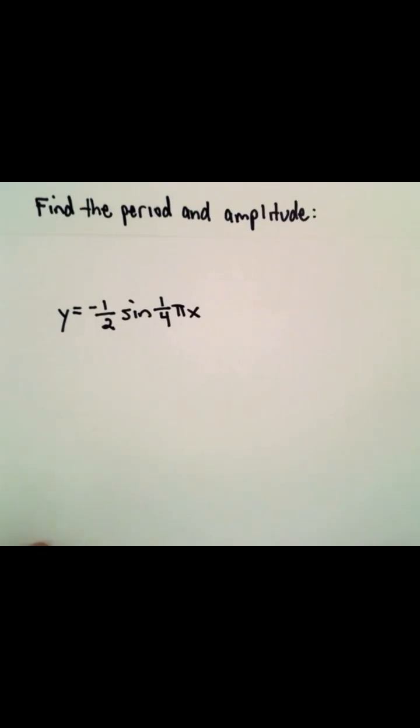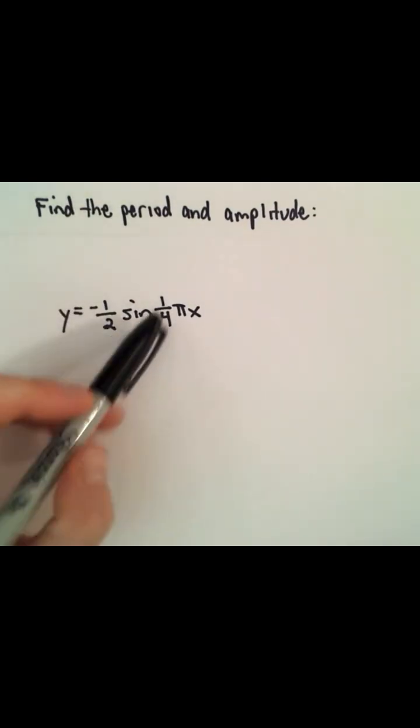Okay, here we want to find the period and amplitude of y equals negative one-half times the sine of one-fourth pi times x.